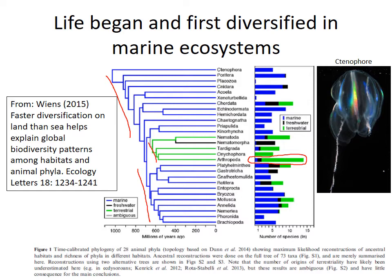A figure from the scientific literature shows this broad pattern: branches in blue represent phyla that originated in the ocean, and branches in green represent phyla that originated on land. Most broad branches of the tree of life originated in the ocean, giving the ocean higher phylum-level diversity, even though groups like arthropods are extraordinarily diverse on land at the species level.